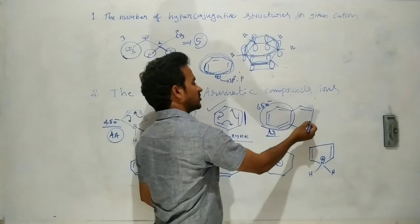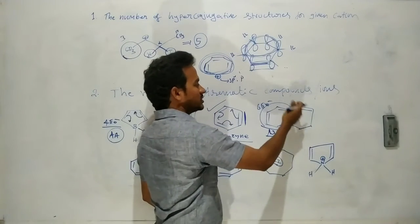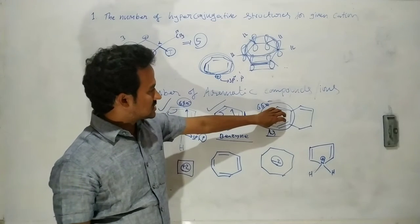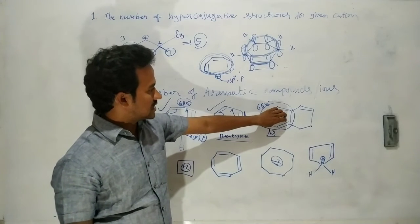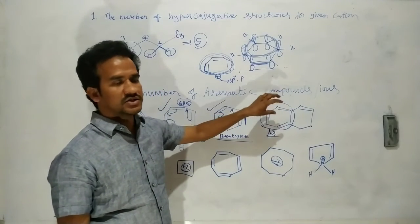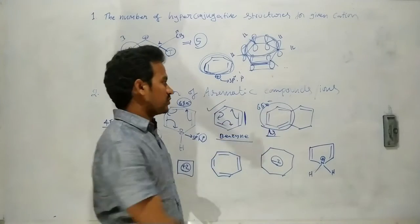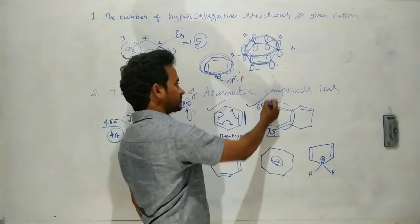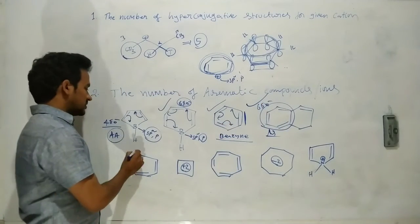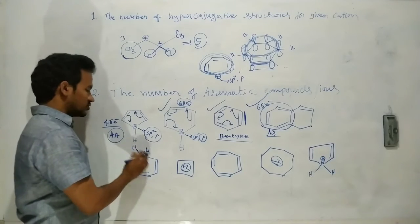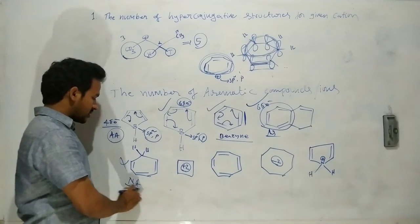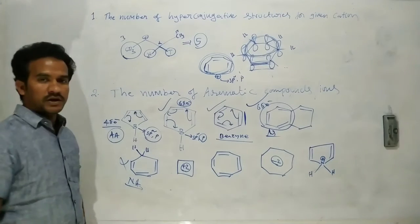The next structure has an sp3 carbon in the ring. Because of this sp3 carbon, there is no continuous conjugation throughout the ring. This compound is therefore non-aromatic.